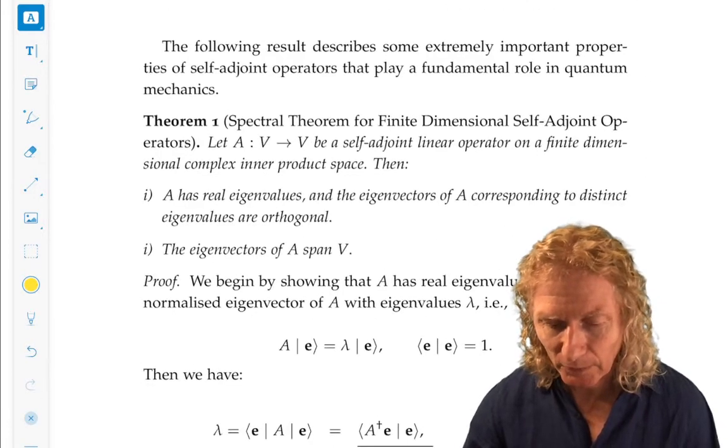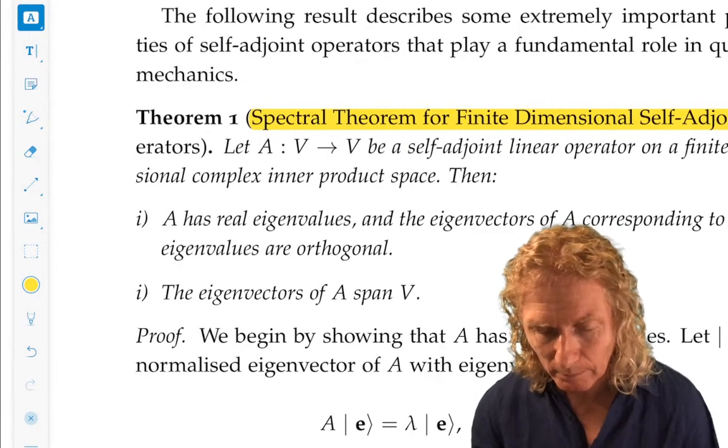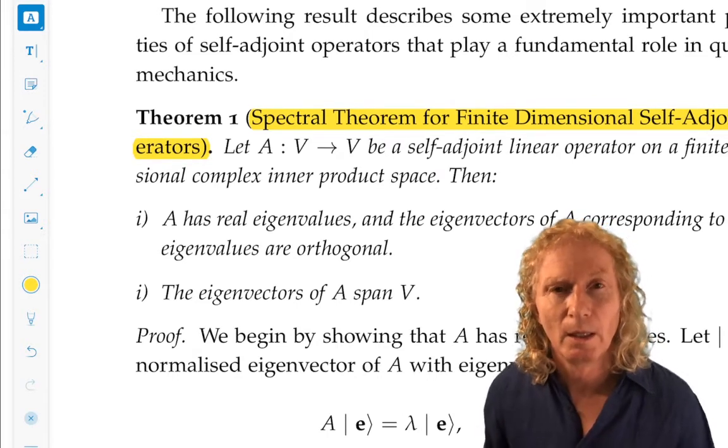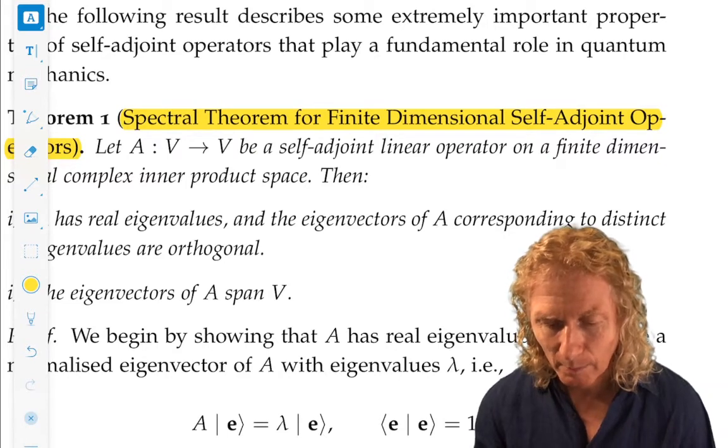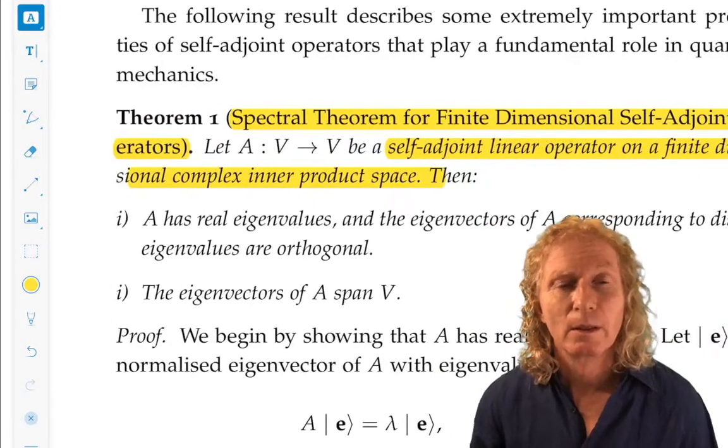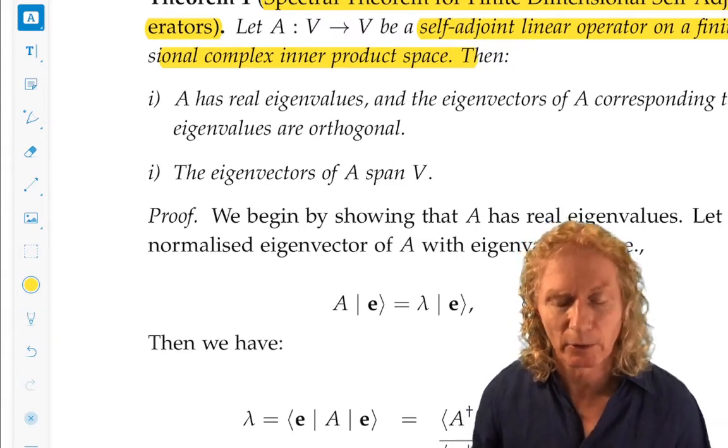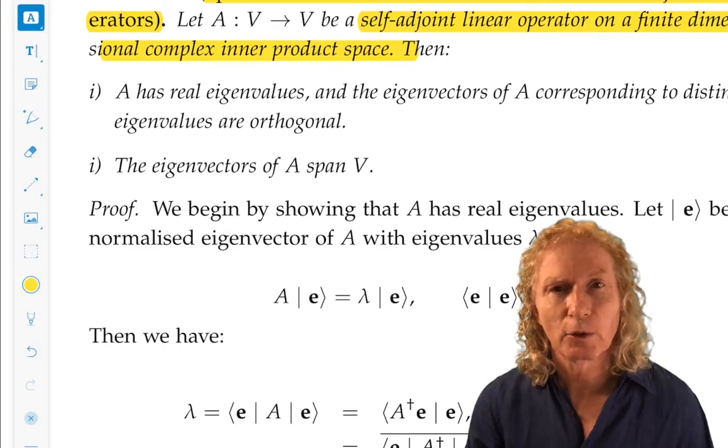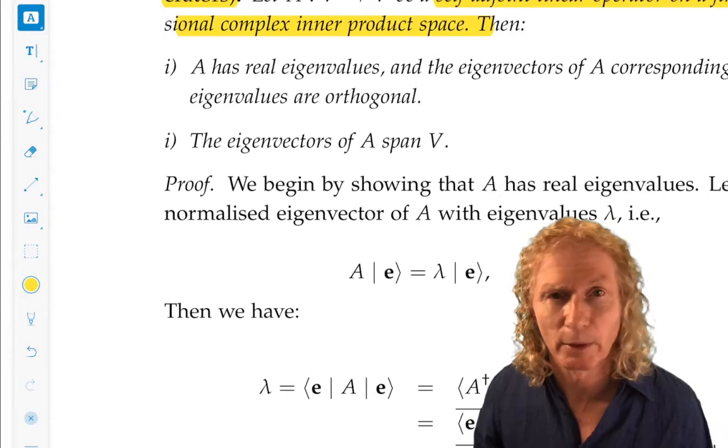So, I want to end with a statement of the spectral theorem for finite dimensional self-adjoint operators. I didn't say on a complex inner product space, but that's always going to be the case for us here. Actually, I did say that in the next line. Sorry about that. I didn't say that in that line. So, let A map V into V be a self-adjoint linear operator on a finite dimensional complex inner product space. Then, we have the two really fundamental properties for self-adjoint operators. Now, we're doing this in finite dimensions. I'll say a couple of words about that. But, A has real eigenvalues. And the eigenvectors corresponding to distinct or different eigenvalues are orthogonal. And therefore, we can always make them orthonormal.